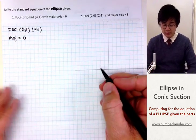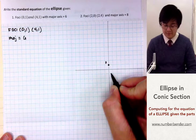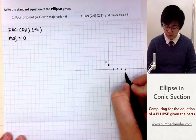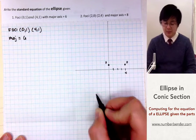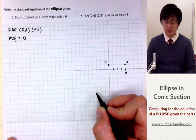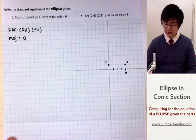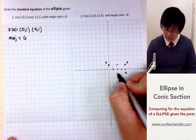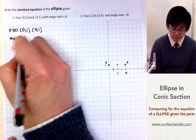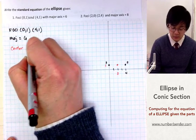Starting with the first focus at (0, 1). This is the first focus, and the other focus will be at (4, 1). Now with the given foci, we know that we can find the center, which is in between our two foci. So the center is at (2, 1). We are now able to find the center of our ellipse, which is at (2, 1).